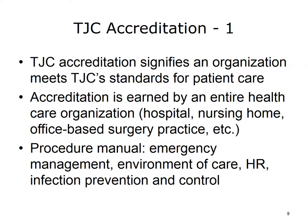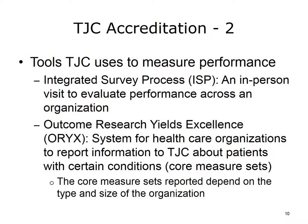TJC performs two functions to keep patients safe. Achieving accreditation signifies that an organization meets TJC's standards for patient care. Accreditation is earned by an entire healthcare organization, such as a hospital or a long-term care facility. Each organization must follow a procedure manual customized for that type of organization, covering topics such as emergency management, environment of care, human resources, and infection prevention and control. The Joint Commission collects data through on-site surveys via the Integrated Survey Process, or ISP, and through performance measurement using Outcome Research Yields Excellence, or ORIX.